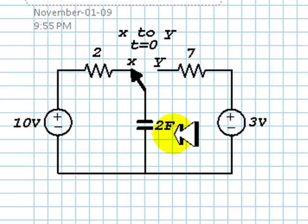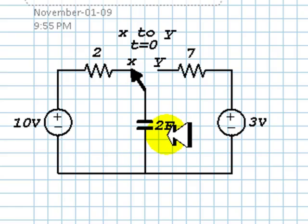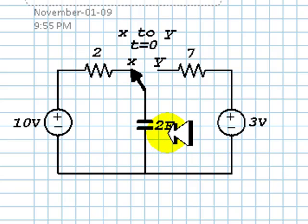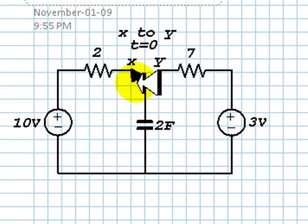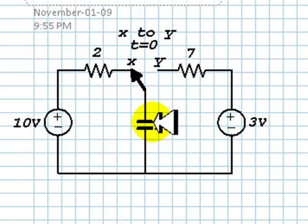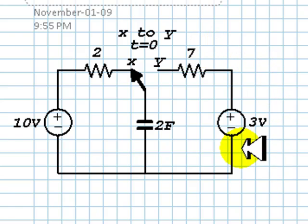This circuit, as simple as it is, is very important to us because it can be shown that almost any RC circuit in our course can be reduced to this one. This capacitor has been connected to the Thevenin equivalent on the left for a very long time. At t equals 0, the switch will move to position Y and will connect the capacitor to a different Thevenin equivalent, the one on the right.